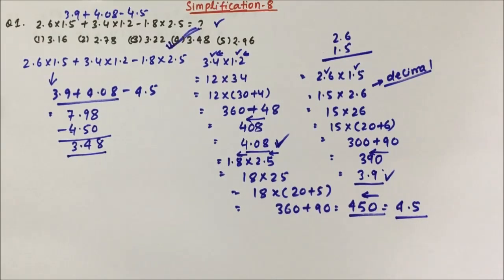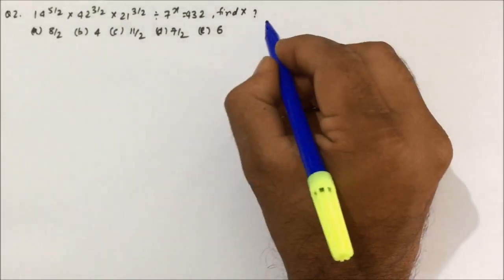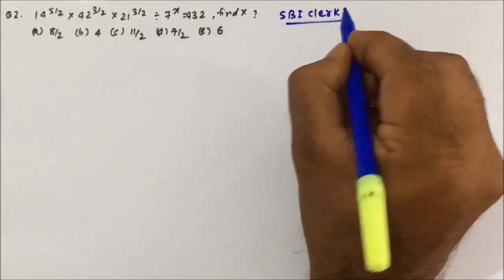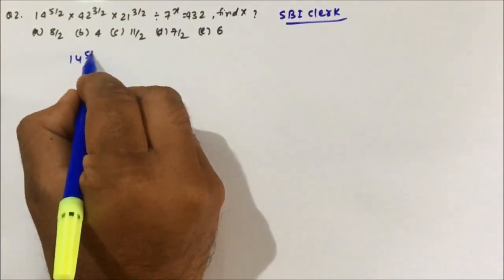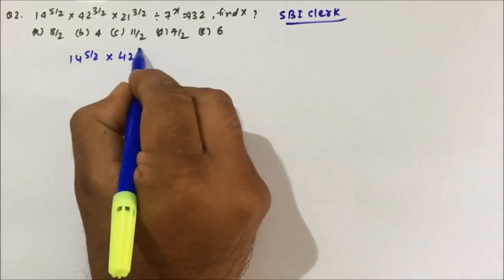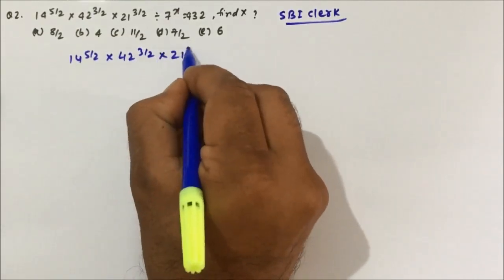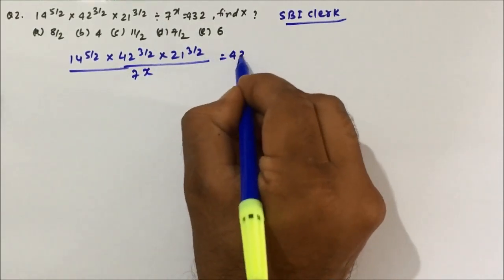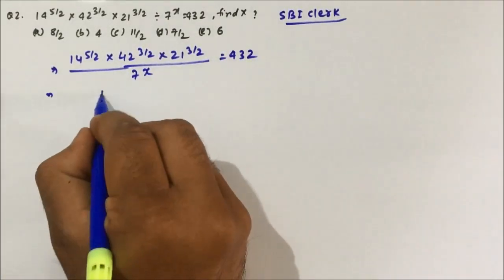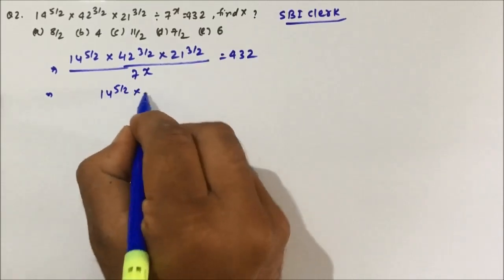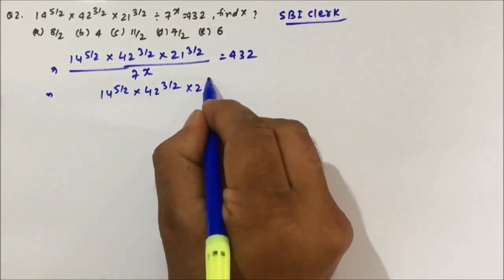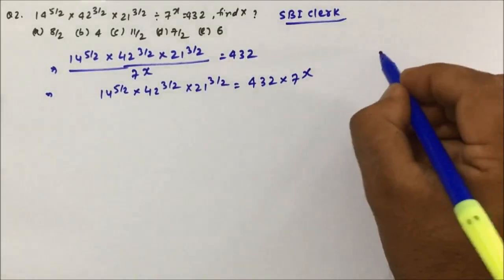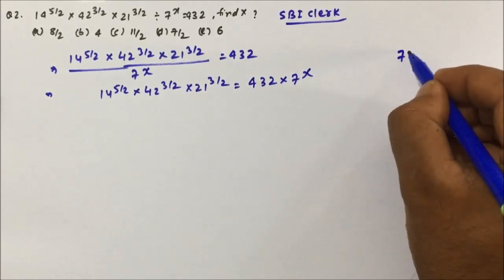Let's see Question 2, which has been asked in the SBI Clerk exam. The question is: (14^(5/2) × 42^(3/2) × 21^(3/2)) ÷ 7^x = 432. We need to find x. So: 14^(5/2) × 42^(3/2) × 21^(3/2) = 432 × 7^x.